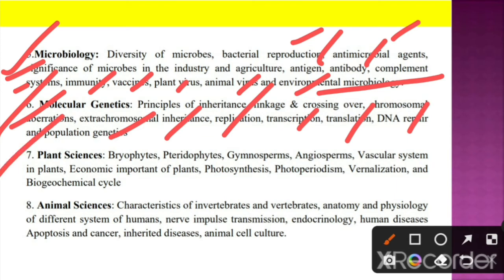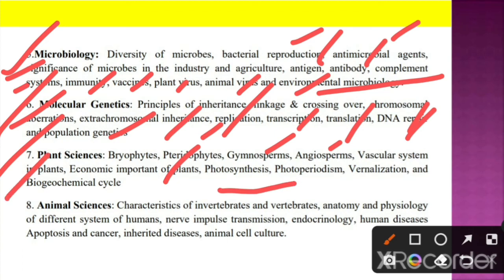Unit 7 is about plant sciences. We have to understand plant science topics including bryophytes, gymnosperms, angiosperms, vascular systems in plants, economic importance of plants, photosynthesis, photoperiodism, vernalization, and biochemical cycles.